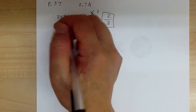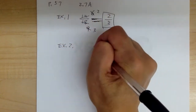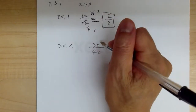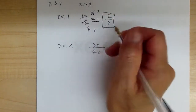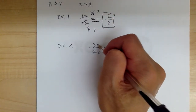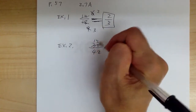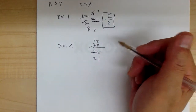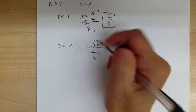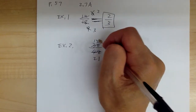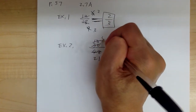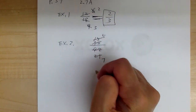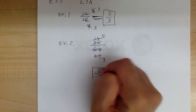Now let's go to example 2. You have 30 over 42. Try to give yourself enough space to write. Notice both are even, so you can divide by 2. Divide by 2, you get 15. Divide by 2, you get 21. Try to write above and below so it's easier to keep track. Now you got 15 and 21. Both of these are divisible by 3, so divide by 3, you get 5. Divide by 3, you get 7. These are prime numbers already, so this equals 5 over 7. That's your answer.